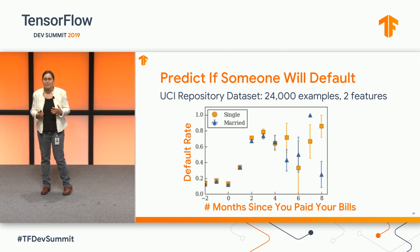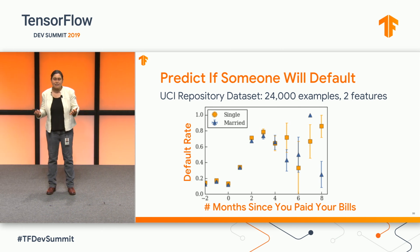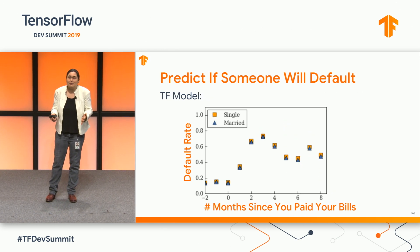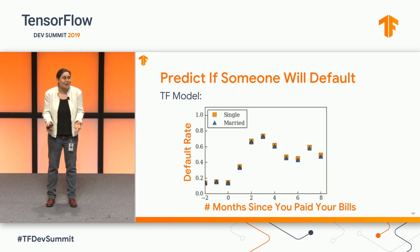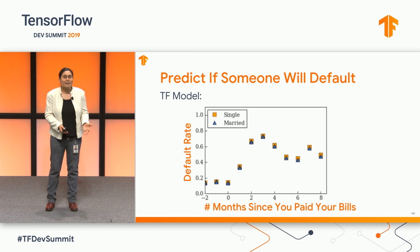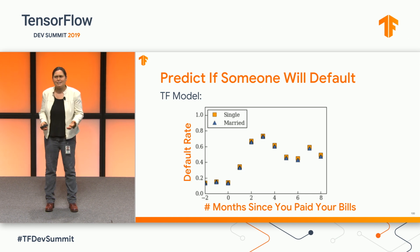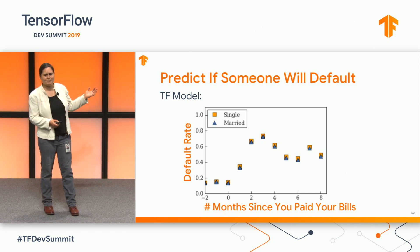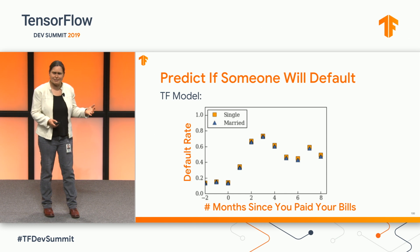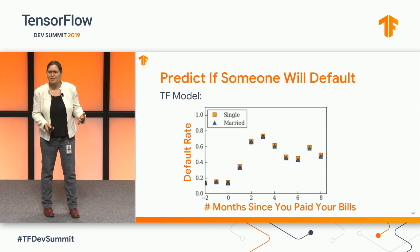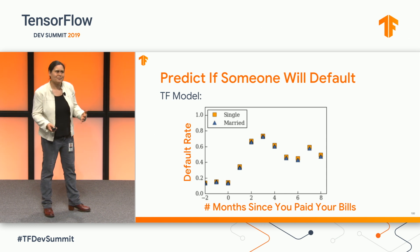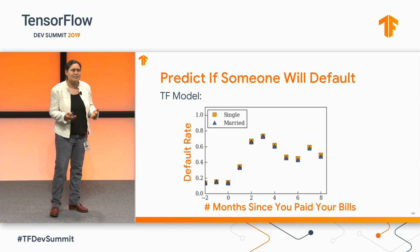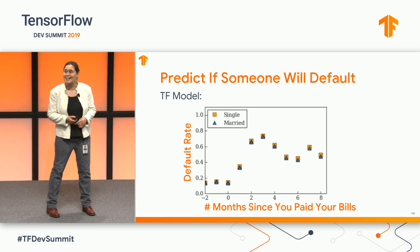So what happens when we train a model? It turns out it doesn't really matter if we're single or married. What really matters is how long it's been since you paid your bills. But the big surprise is the model believes it's better if you've not paid your bills for seven months than six months — that you're going to get a higher credit score. This is bad AI behavior, and this is one of the reasons that some people don't like AI.